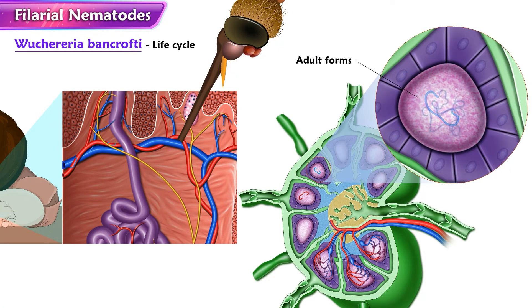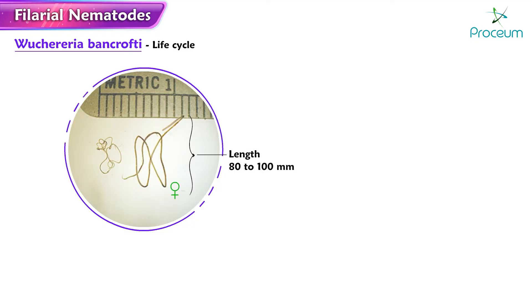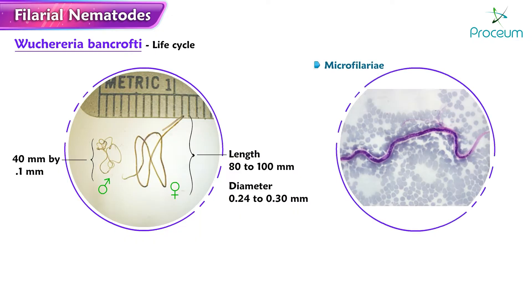They develop into adults that commonly reside in the lymphatics. The female worms measure 80 to 100 mm in length and 0.24 to 0.30 mm in diameter, while the males measure about 40 mm by 0.1 mm.